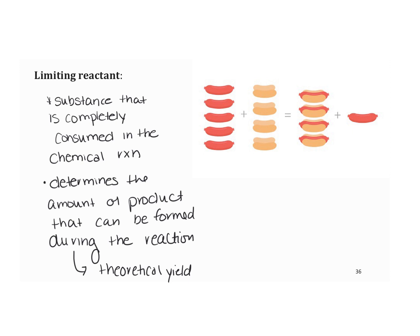In this analogy, the limiting reactant — abbreviated as LR — is the bun. You can't make any more hot dog sandwiches than the buns you have. Four sandwiches is the theoretical yield. The hot dog that's left over — anything left over — is called the excess reagent.